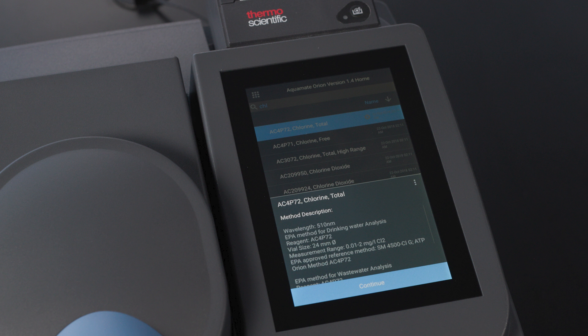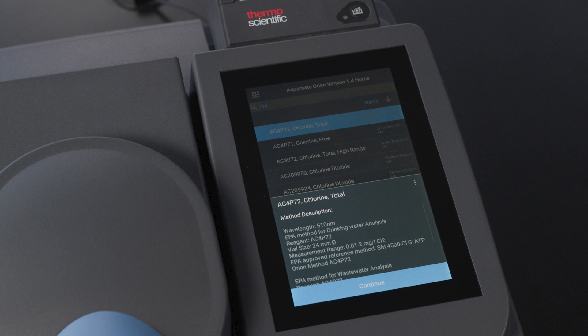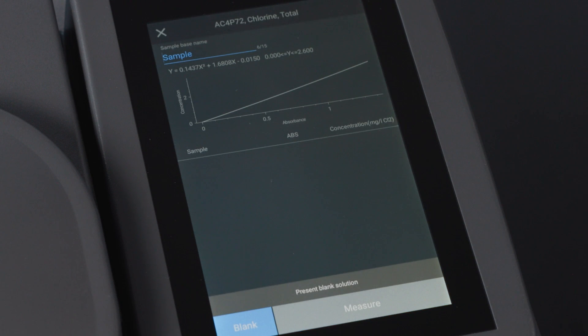We can see that the wavelength is 510 nanometers and that the method is EPA approved for drinking water and wastewater. We can see the reagent number again, the necessary vial size and the measurement range. There is a lot of detail in this screen. Once we've confirmed that we have the right method, we can select continue.